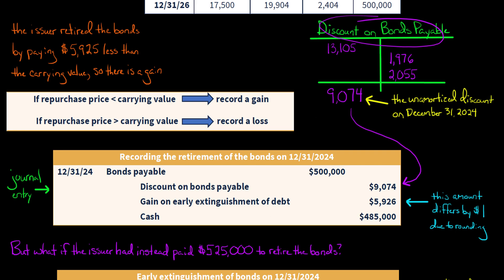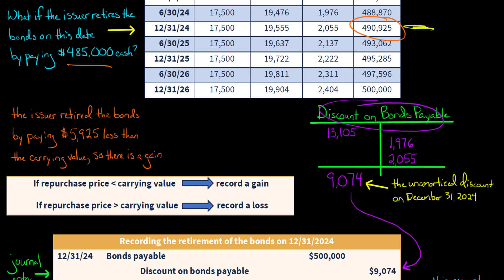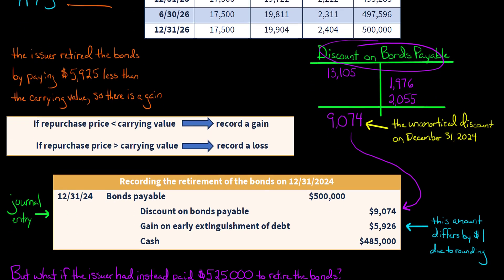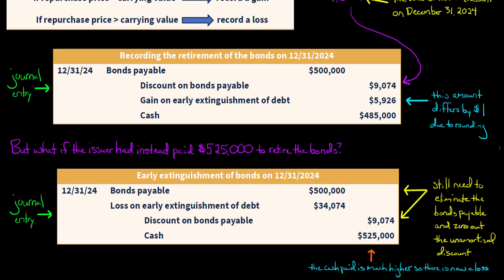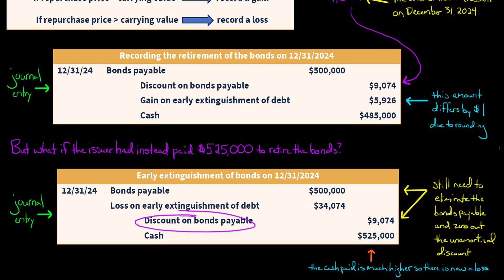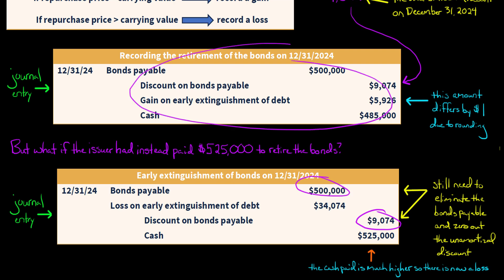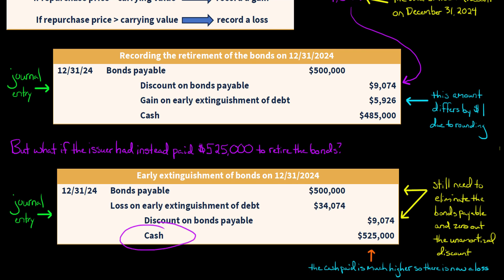Now let's look at an alternative situation. What if the issuer had instead paid $525,000 to retire the bonds? Now they're paying much more than the carrying value of $490,925 at the time of retirement. Whereas before we assumed they paid less, now they're paying more than carrying value, so there's going to be a loss instead of a gain. In the journal entry, we still debit bonds payable and we still credit the discount on bonds payable for $9,074 to remove it — those parts are the same.